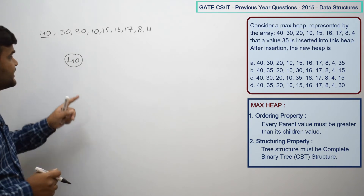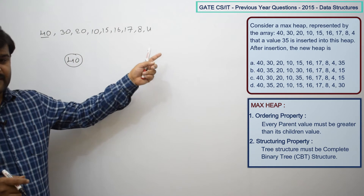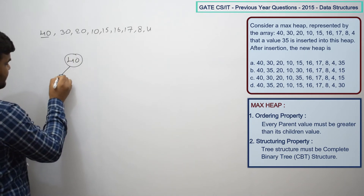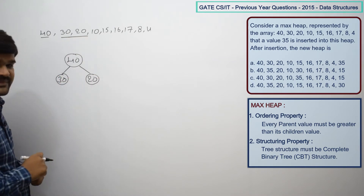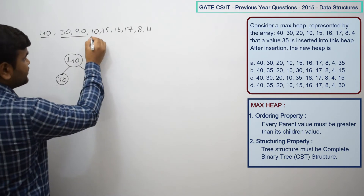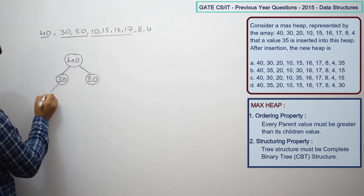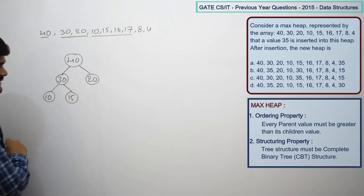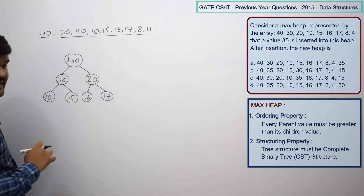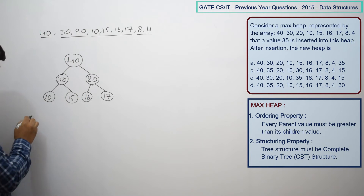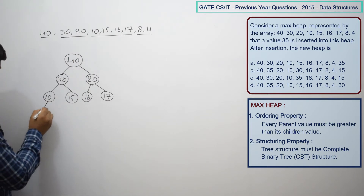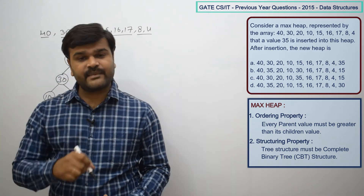Since the heap is stored in an array, this represents a level-order traversal. So 40 is the root, its left child is 30 and right child is 20. In the next level, 10 and 15 are children of 30, and 16 and 17 are children of 20. Then 8 and 4 fill from left to right in the last level. This is the existing max heap.